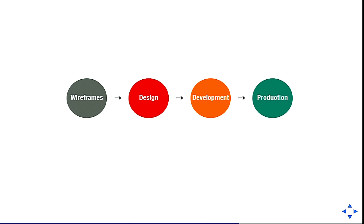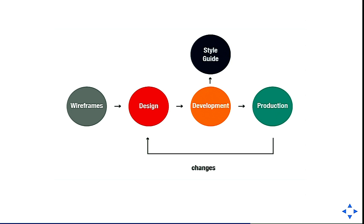Whether you have a waterfall or agile project, for each feature you go from wireframes to design, develop, then launch to production. If you make a change you go back to design, then back to development, then production again. If you introduce a style guide into that flow, you have to design, develop, update the style guide — but in the rush of a project you might forget to update it. Style guides that are out of date are really useless.